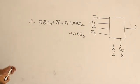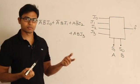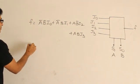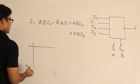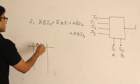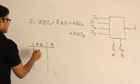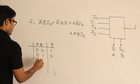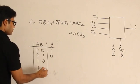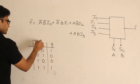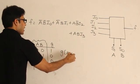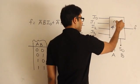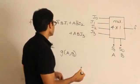Now let us talk about implementing two-variable functions. Assume I have a function g in two variables a and b, with values: for 0,0 → 0; 0,1 → 1; 1,0 → 0; 1,1 → 1. I have a 4×1 multiplexer and I want to implement this function using it.